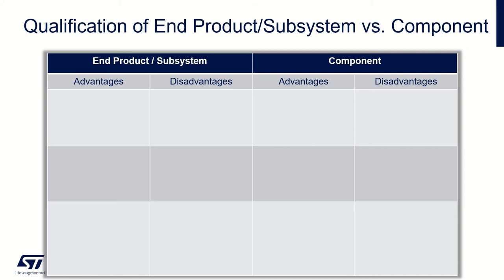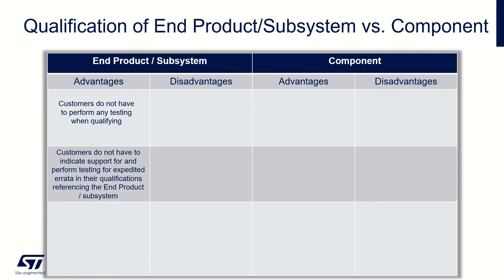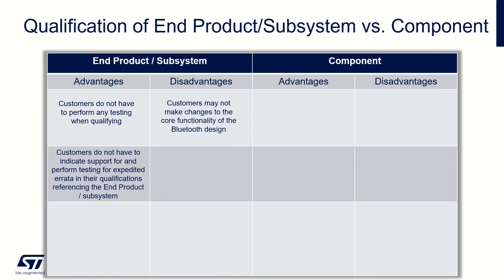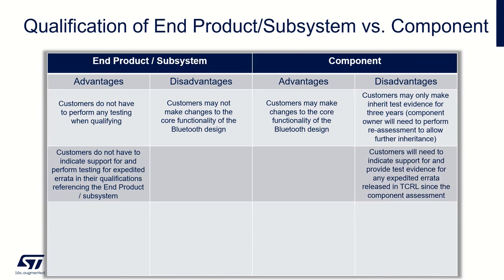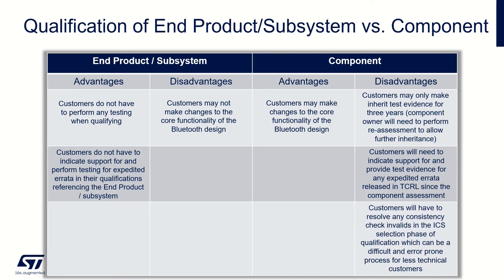The following table states certain advantages and disadvantages to help members determine the best choice. For end products and subsystems, the customer does not have to test when qualifying and can indicate support for expedited errata; however, the customer may not make any changes to the core functionality. For the component product type, the customer can make changes to the core functionality, but there are limitations on inheritance — determined to three years — after which reassessment is required. Customers also need to provide test evidence for expedited errata and resolve any inconsistency in the ICS selection phase.